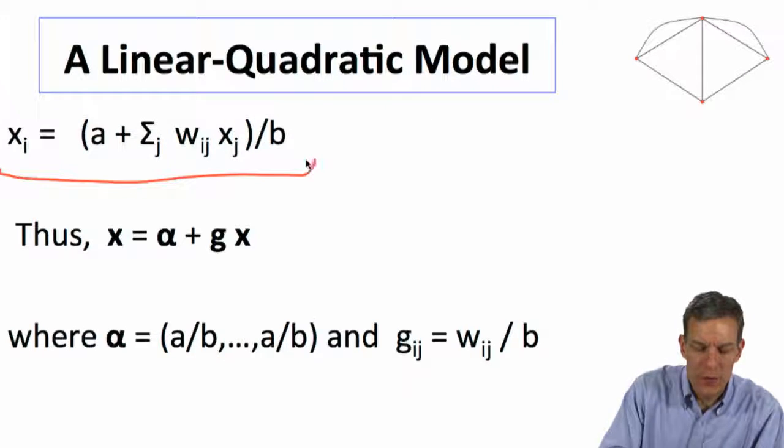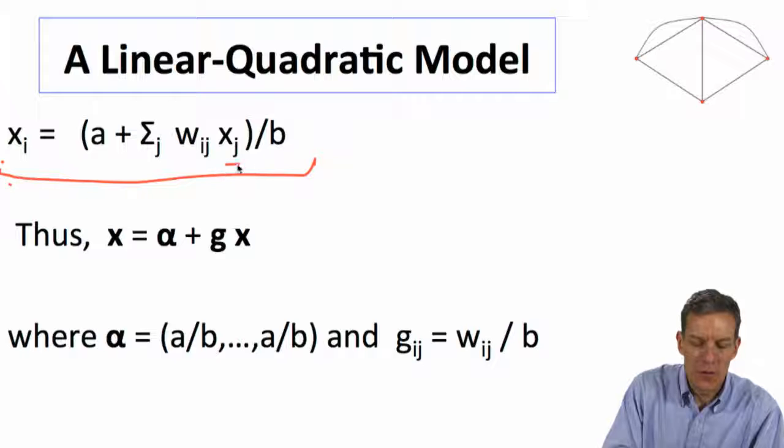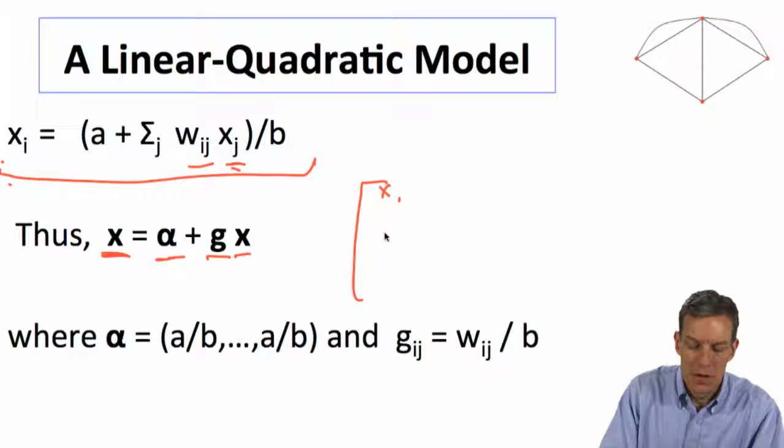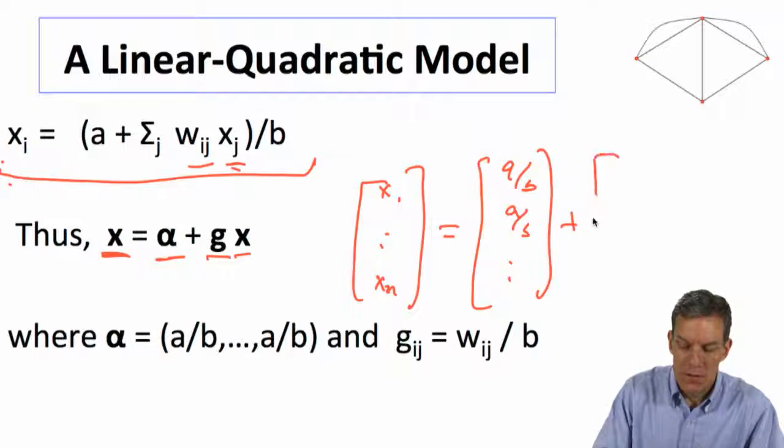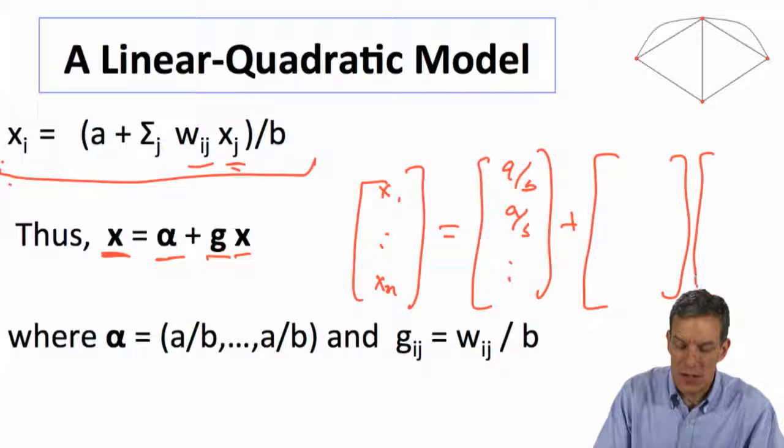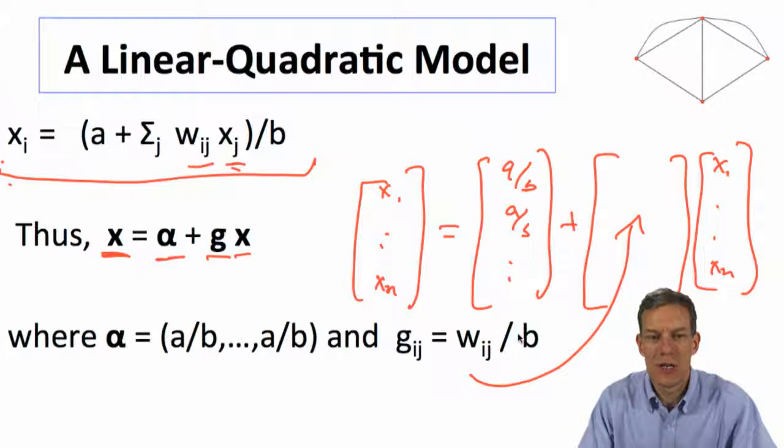So to solve for all of these simultaneously, what we've got is, if we write this down as a vector now, x1 through xn, it's a function of everybody else, and waits on what everyone else is doing. You can rewrite this as a vector x is equal to alpha times g of x. So we've got our x1 through xn, and that's equal to a vector, everybody is taking action, a over b, a over b, plus a matrix times the actions where this matrix has entry in the ijth entry has wij over b.